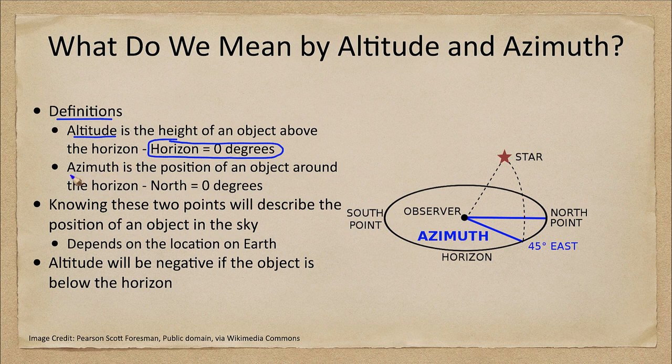The azimuth is the position of an object around the horizon, and we define that starting from the north point. North is zero degrees.